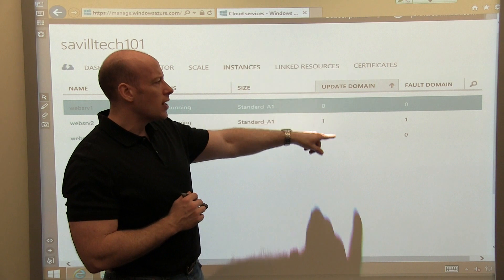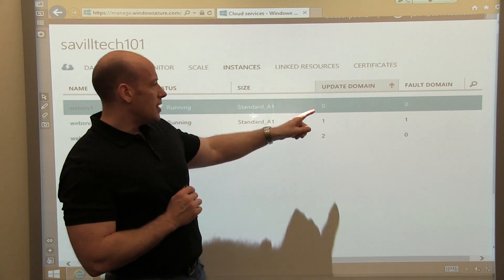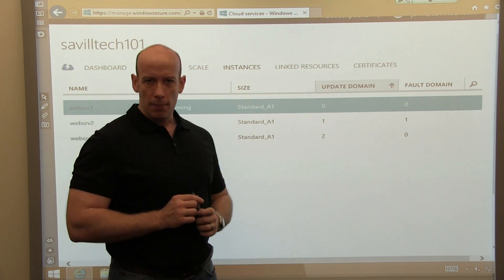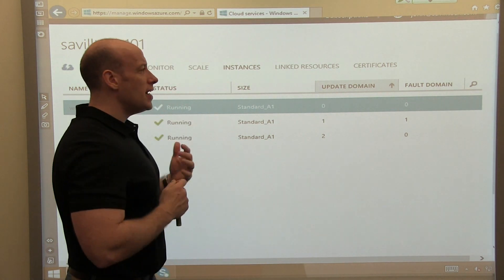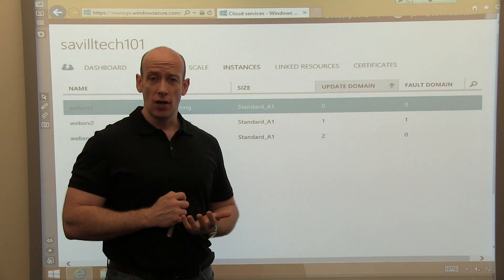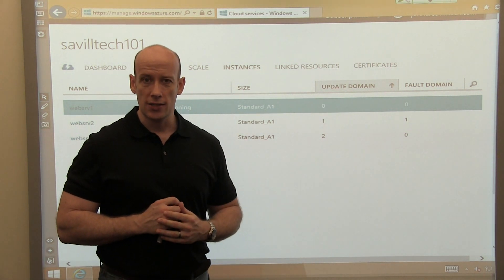So that's a fault domain. And you see this other thing called an update domain. And you'll notice is each VM is actually in a separate update domain. So what do these do? Now, I really think of update domains more around platform as a service. But they do have an impact on IaaS as well.